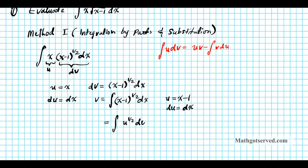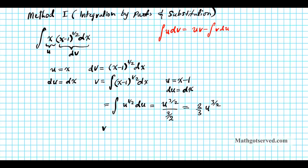Using the power rule, the antiderivative of u to the 1/2 is u to the 3/2 divided by 3/2, which simplifies to 2/3 u to the 3/2. Now we plug back u equals x minus 1 to get v equals 2/3 times x minus 1 to the 3/2. Now we have everything needed for the integration by parts formula.